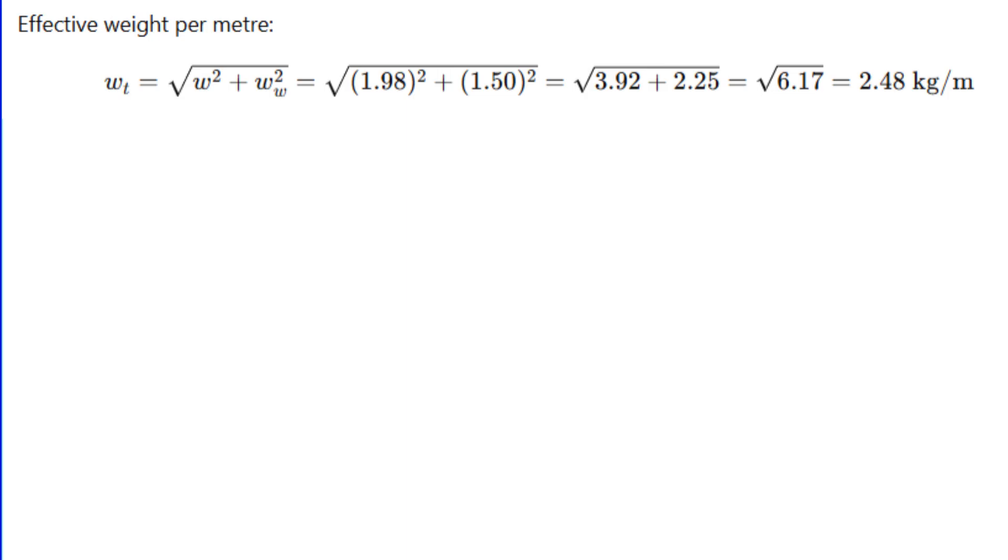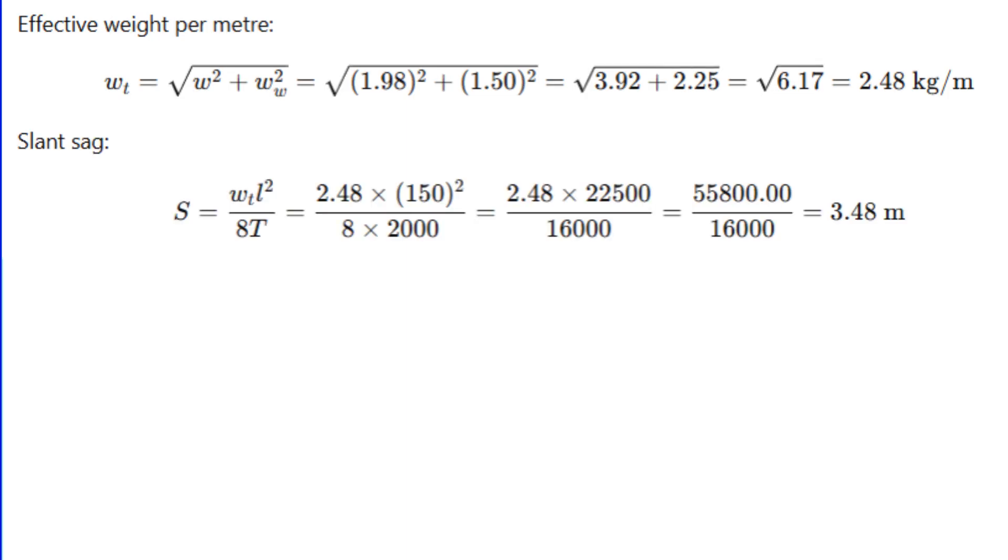Next, calculate effective weight per meter: wₜ = √(1.98² + 1.5²) = √(3.92 + 2.25) = √6.17 = 2.48 kg. Now calculate slant sag: s = wₜ × l²/8T = 2.48 × 150²/(8 × 2000) = 3.48 meters.